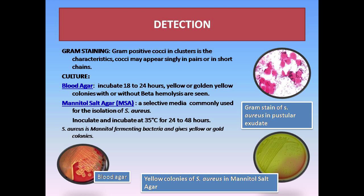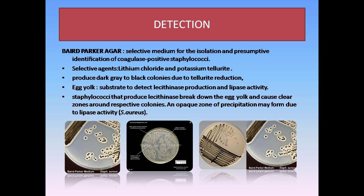Mannitol salt agar is a selective medium commonly used for the isolation of Staphylococcus. We inoculate and incubate for 24–48 hours at about 35 degrees Celsius. Yellow colonies on Mannitol salt agar indicate the presence of Staphylococcus. Baird-Parker medium is a selective medium for the isolation and presumptive identification of coagulase-positive Staphylococci. It contains selective agents lithium chloride and potassium tellurite, which produce dark gray to black colonies due to tellurite reduction. Egg yolk is used as a substrate to detect lecithinase production and lipase activity. Staphylococci that produce lecithinase break down the egg yolk, causing a clear zone around respective colonies, and a zone of precipitation may form due to lipase activity.